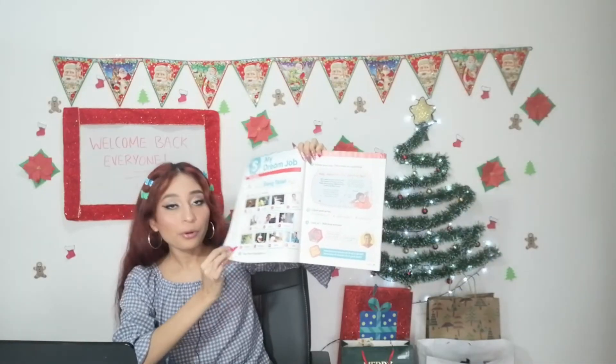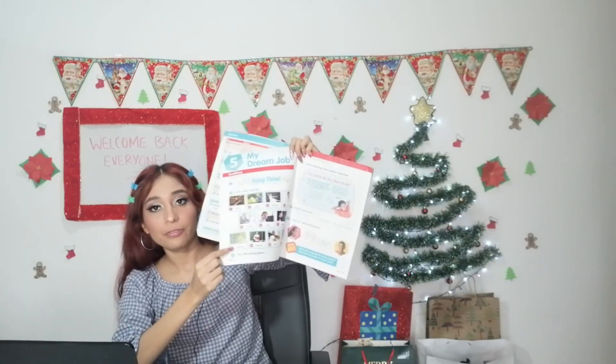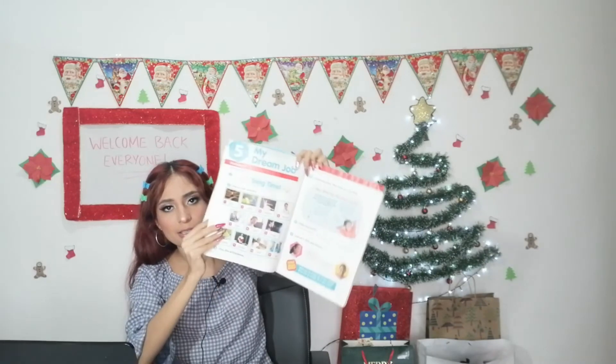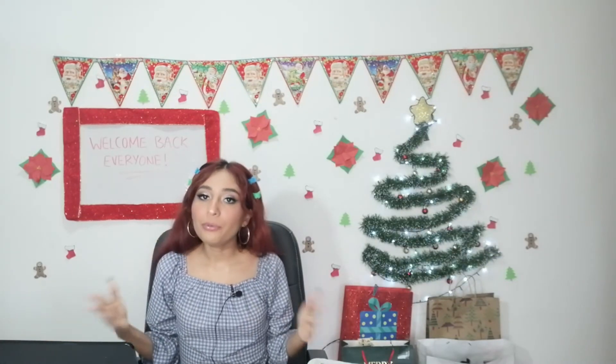We're going to be working starting from page 56, which looks something like this. First of all, we are going to start with the vocabulary. What kind of vocabulary are we going to study? We're going to learn about kinds of jobs. Today we're going to learn the most common jobs that you can find in a city.